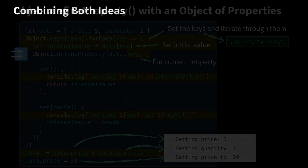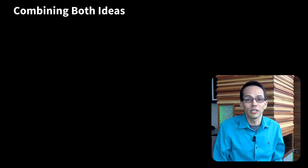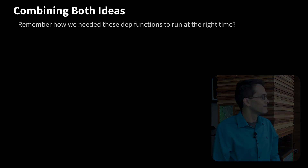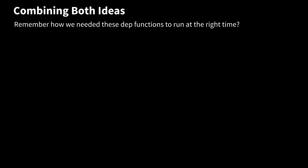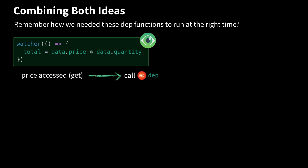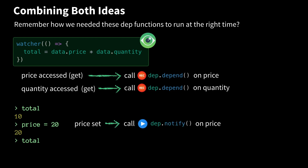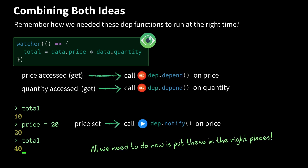You might see where we're going. We're going to take these two techniques now and combine them to create reactivity. I'm excited — are you? Remember how we needed these Dep functions to run at the right time? Here's our watcher. When price gets accessed in the get, we need to call dep.depend on price. And when quantity is accessed, we need to call dep.depend on quantity. And when price gets set, we want to call dep.notify on price. And then when we call total, we get back 40 because we're now reactive. All we need to do now is put these pieces of code in the right places.